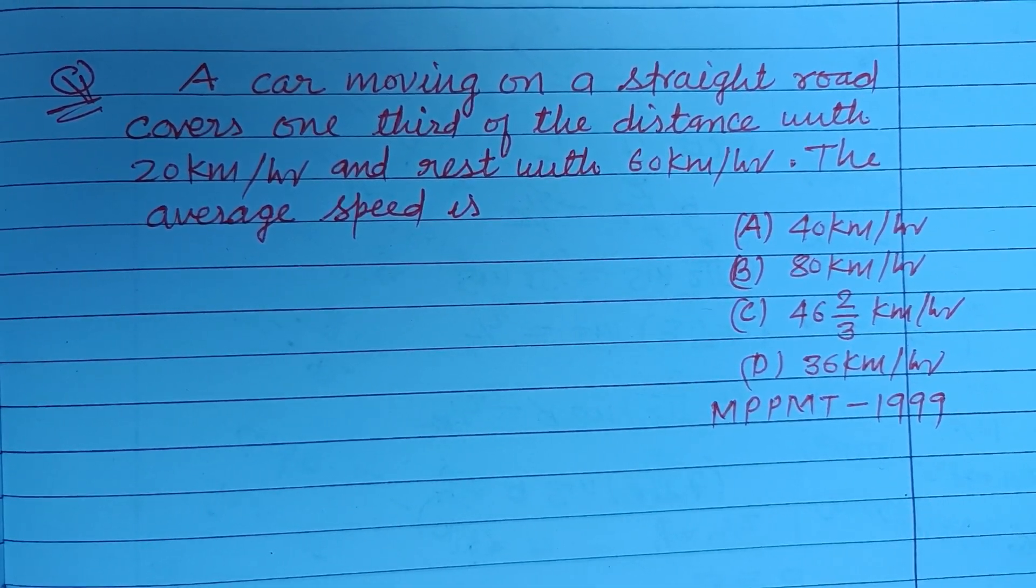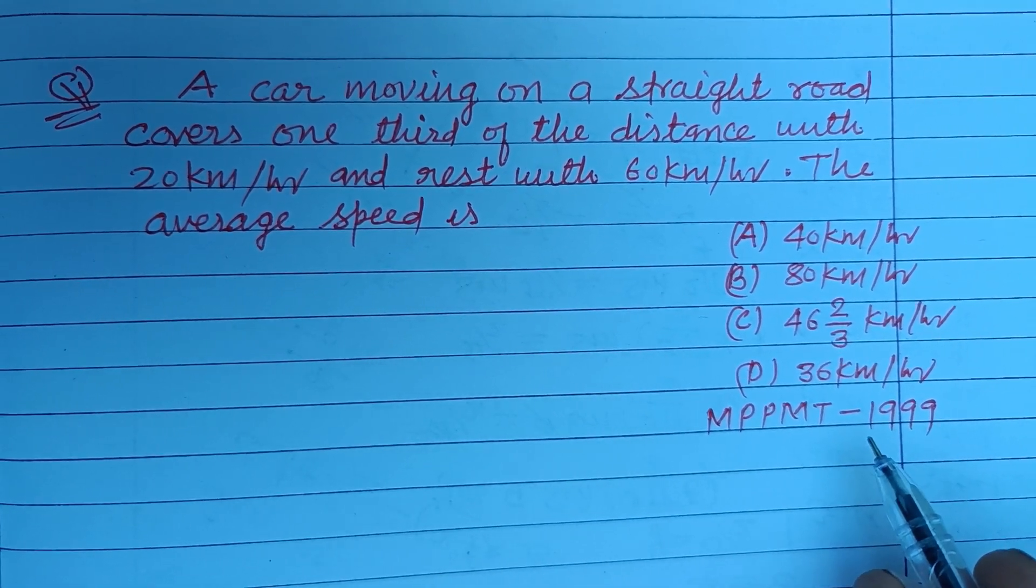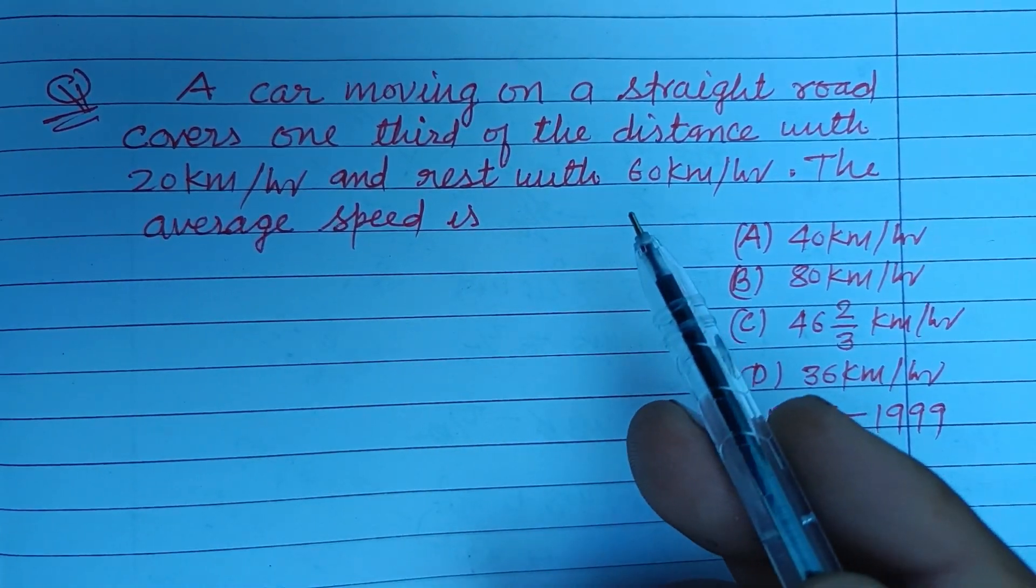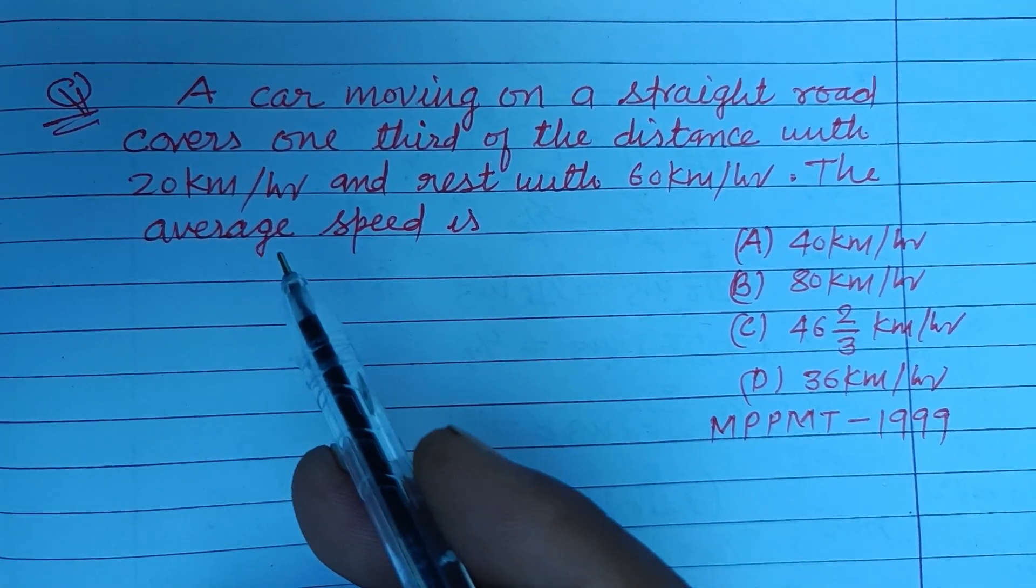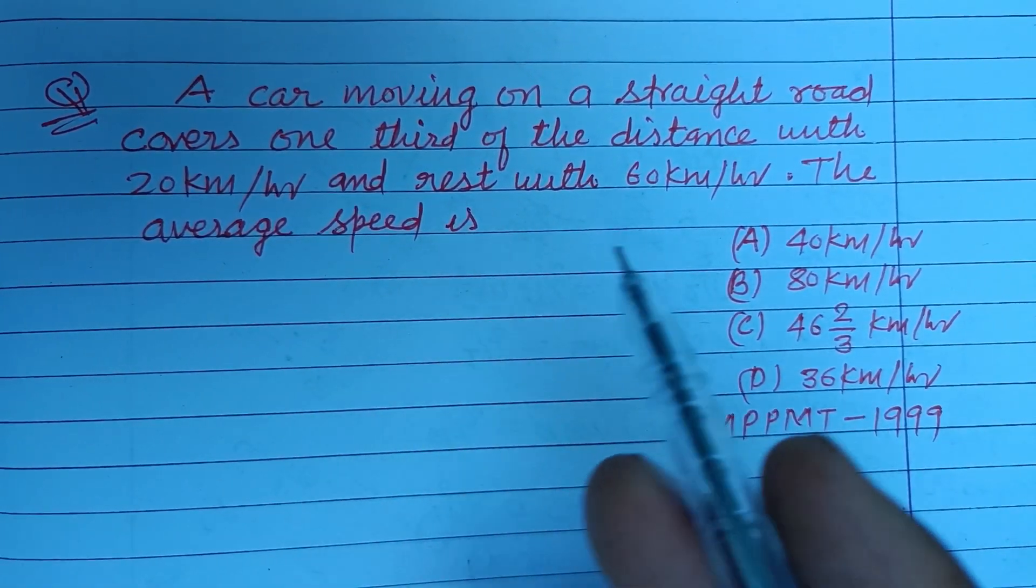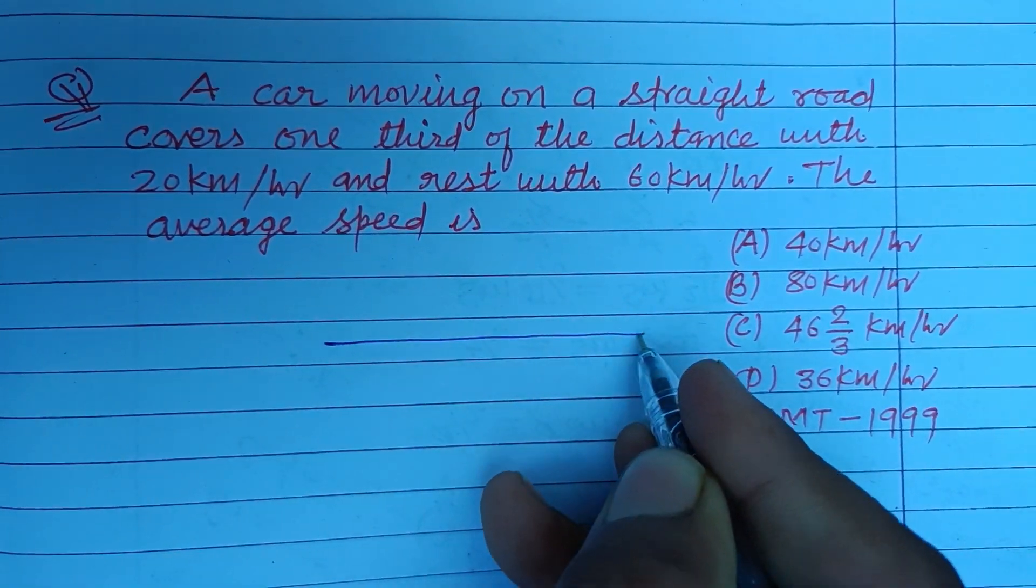Hello viewers, warm welcome to this YouTube channel. This is a question from MPPMT 1999. A car moving on a straight road covers one third of the distance with 20 km per hour and the rest with 60 km per hour. The average speed of the car is?